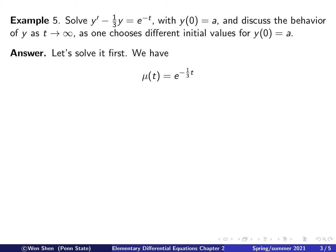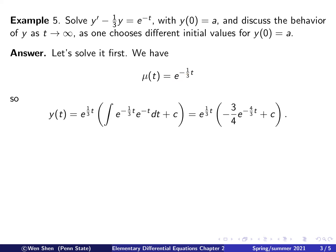To compute the integrating factor mu of t, we integrate negative one third, giving us negative one third t as the exponent of the exponential function. Plugging into the solution formula, we write y of t as mu to the negative one — which is e to the one third t — times the integral of mu times g. The two exponential functions combine into e to the power negative 4 over 3 t, which integrates to negative 3 over 4 e to the power negative 4 over 3 t, plus an arbitrary constant c.